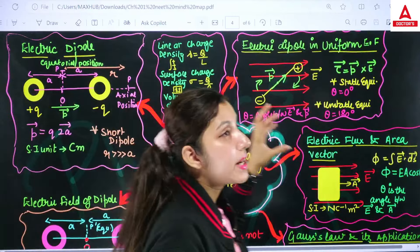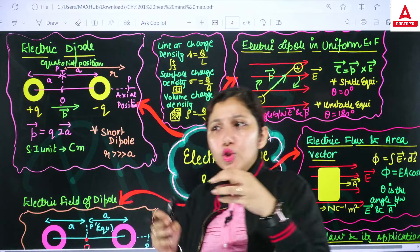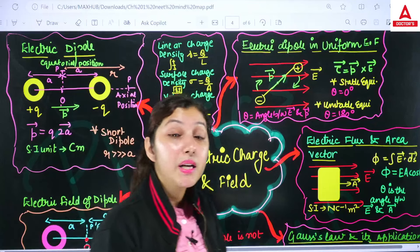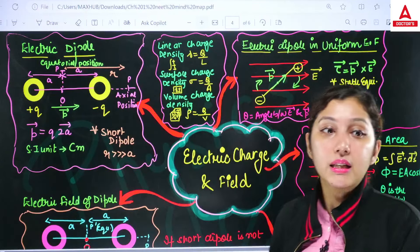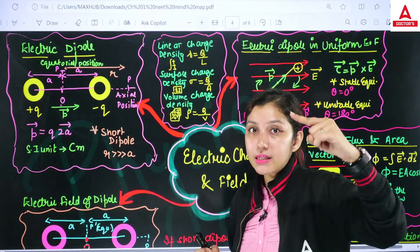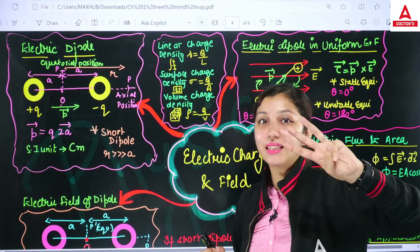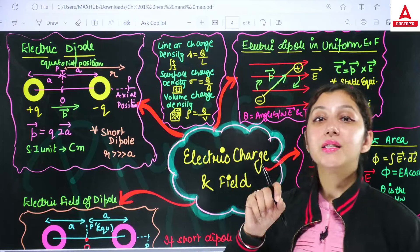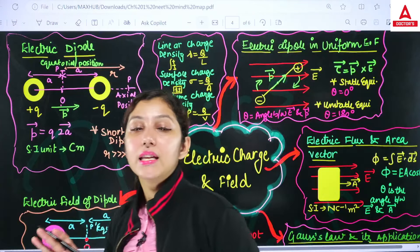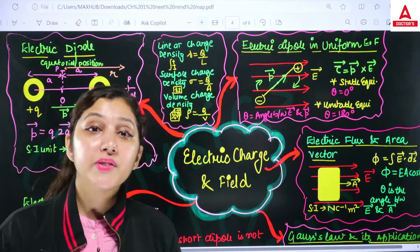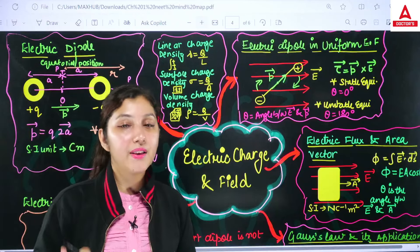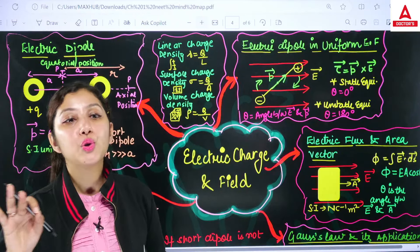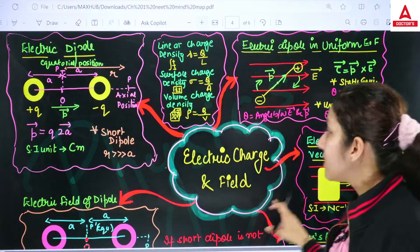For discrete charge systems, Coulomb's Law applies directly. For continuous charge distribution, we use charge densities: linear charge density λ = q/L (charge per unit length); surface charge density σ = q/A (charge per unit area); volume charge density ρ = q/V (charge per unit volume).